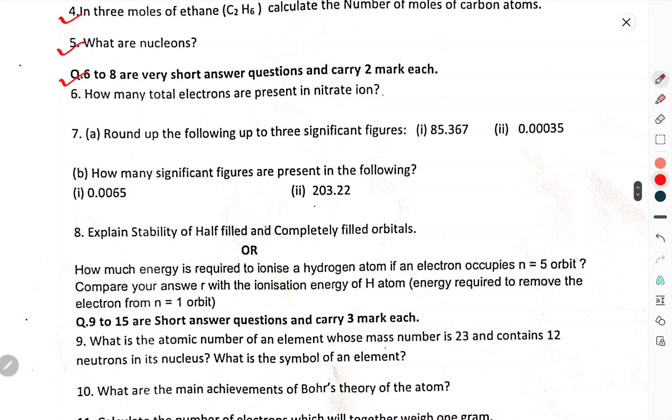Question number 6 to 8 are short answer questions, carrying 2 marks each. How many total electrons are present in nitrate ion? Round the following to 3 significant figures. How many significant figures present in the following?